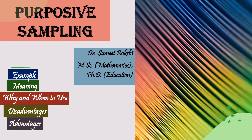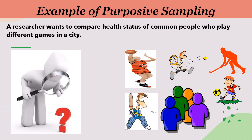First, let me explain purposive sampling through an example. A researcher wants to compare health status of common people who play different games in a city. For this, researcher needs those participants who play some game regularly to fulfill the purpose of the study. So, the first thing researcher will do is reject those members who do not play any game. In this picture, you can see these members are not playing any game. Researcher will reject these members.